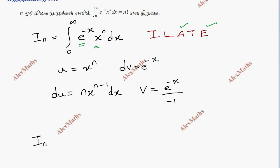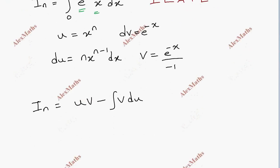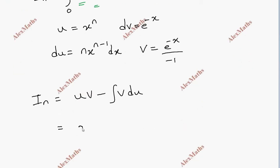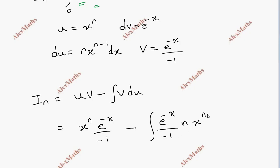Using the integration by parts formula — uv minus the integral of v du — we get: x to the power n times e to the power minus x divided by minus 1, minus the integral of e to the power minus x divided by minus 1 times n times x to the power n minus 1 dx, with limits 0 to infinity.